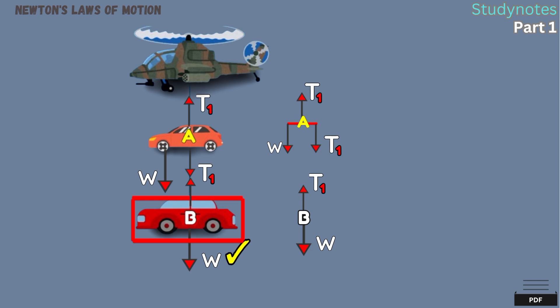But if there was a third object connected from object B, we would have tension force on the bottom of object B. But since we have nothing connected on the bottom of object B, that means we have only weight force.